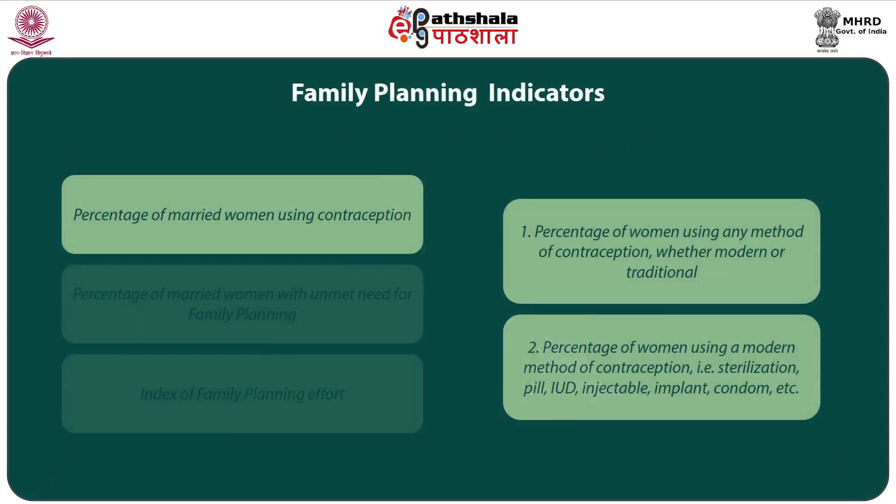Moving to family planning or contraception-related indicators, we are talking about the percentage of married women using contraception — the percentage of women aged 15 to 49 years who are married or in a union and are using a contraceptive or family planning method. The numerator is the number of women aged 15 to 49 who are married or in a union and using a contraceptive method; the denominator is all women aged 15 to 49 who are married or in a union, irrespective of contraceptive use.